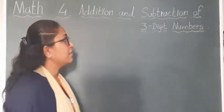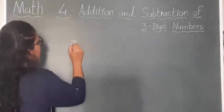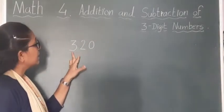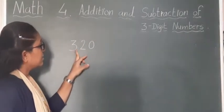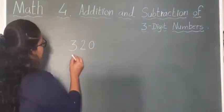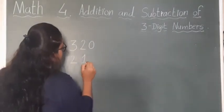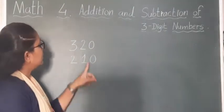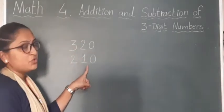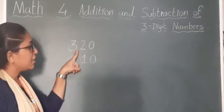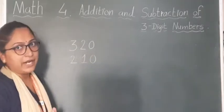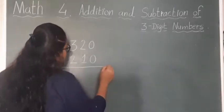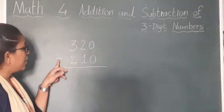If you have been given the number, a 3-digit number 320 — this is the first number. Now if you have another number 210, this is the second number. We have to subtract 210 from the number 320. So put the sign of subtraction, that is minus, symbol of minus here.